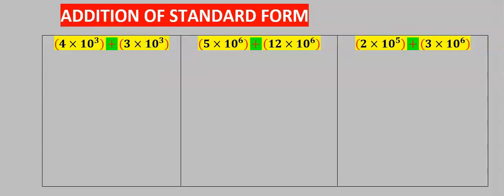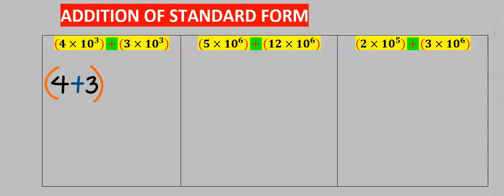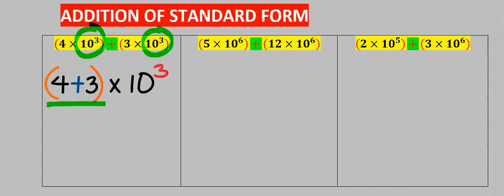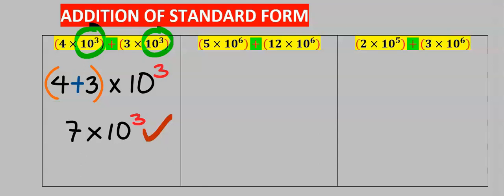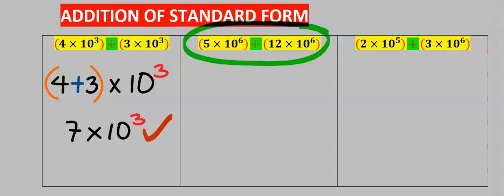Step number one: I'm going to add the numbers. Step number two: 10 to the power of 3 are the same, hence I will multiply this with 10 to the power of 3. Next, 4 plus 3 gives you 7, and this is your answer.